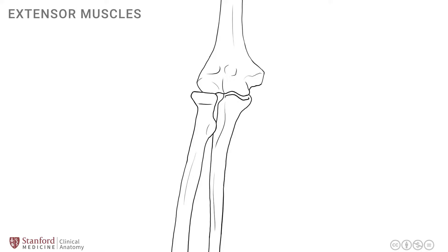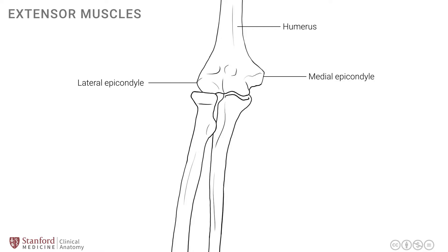To orient ourselves, this is the distal end of the humerus, which has a prominent bony projection known as the medial epicondyle. On the lateral side is the lateral epicondyle. This distal end of the humerus articulates with the radius and the ulna. The attachment of the extensor muscles is in the region of the lateral epicondyle and the bony ridge just superior to it, known as the supracondylar ridge.